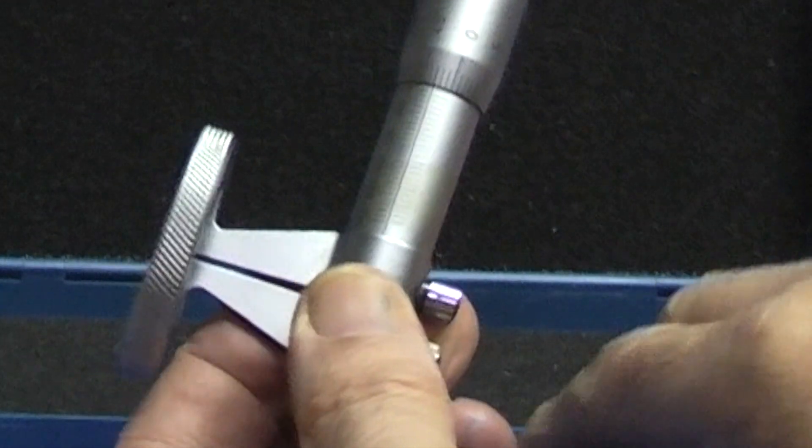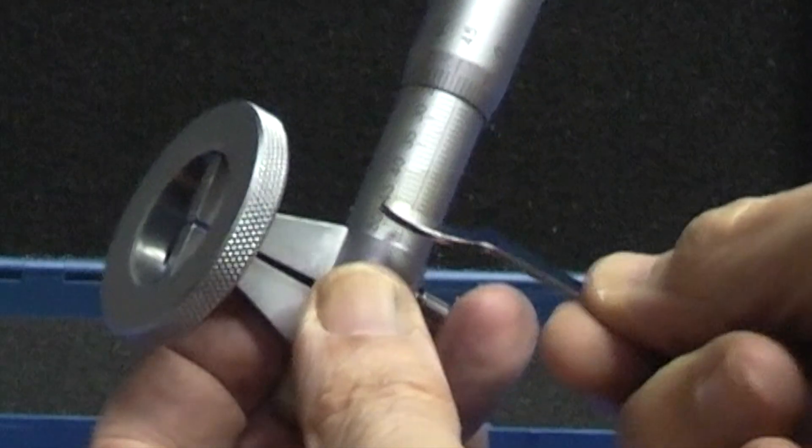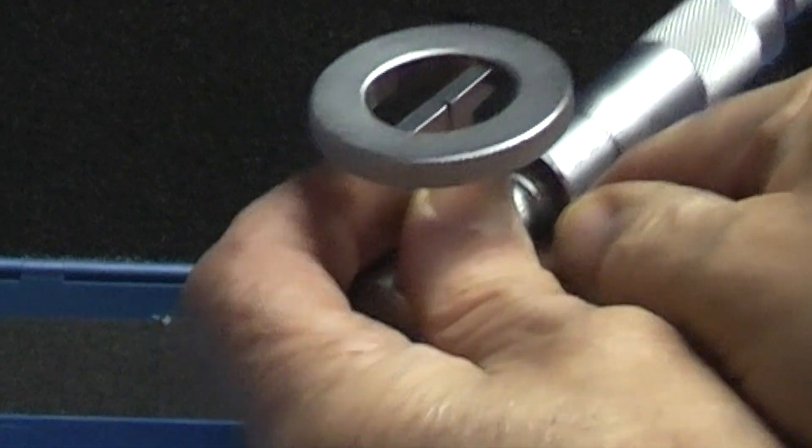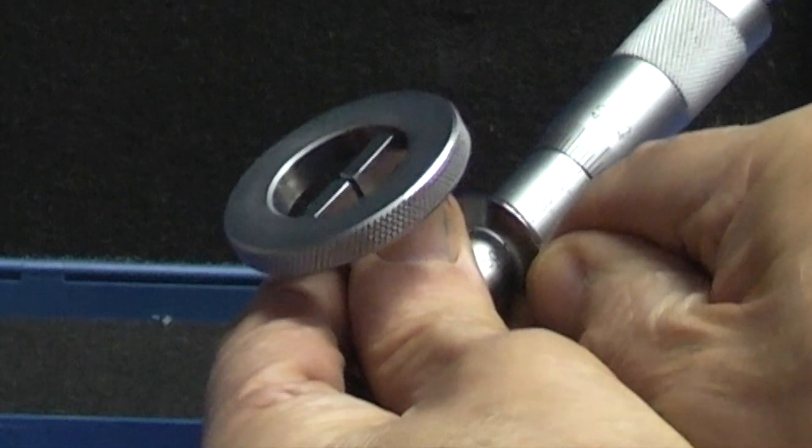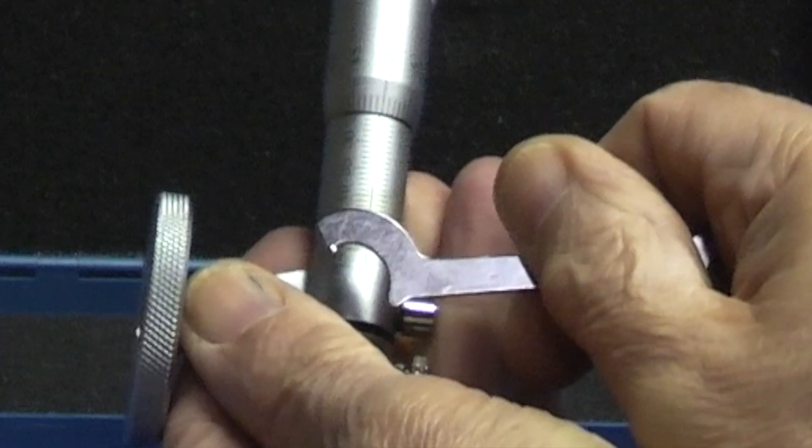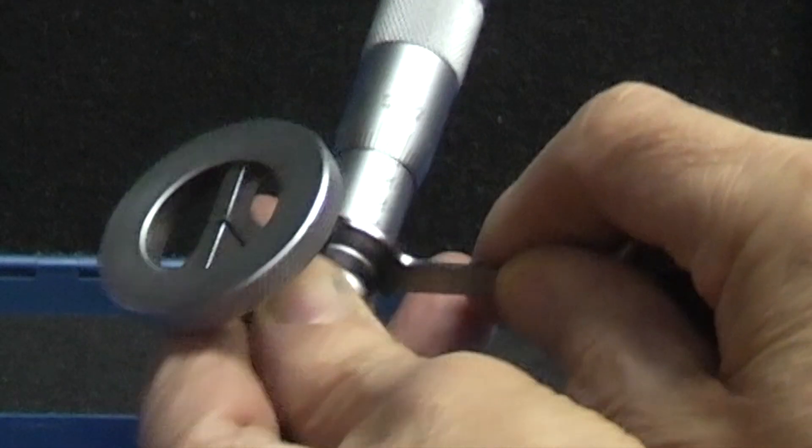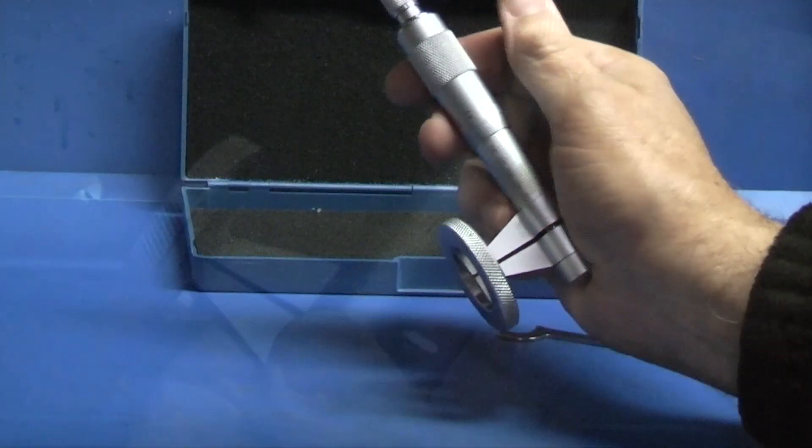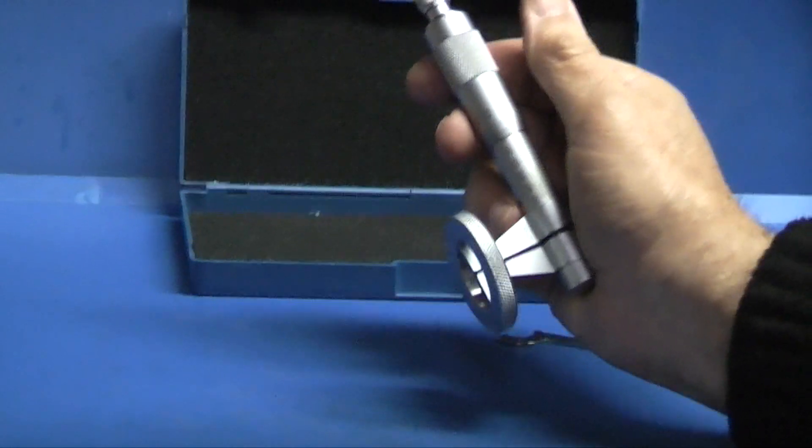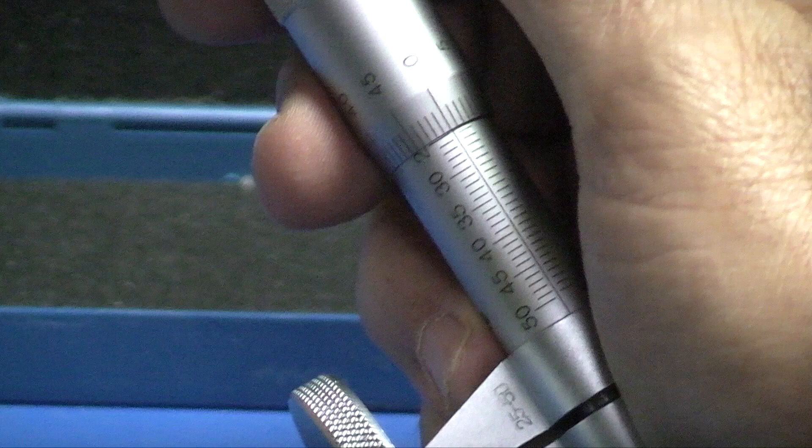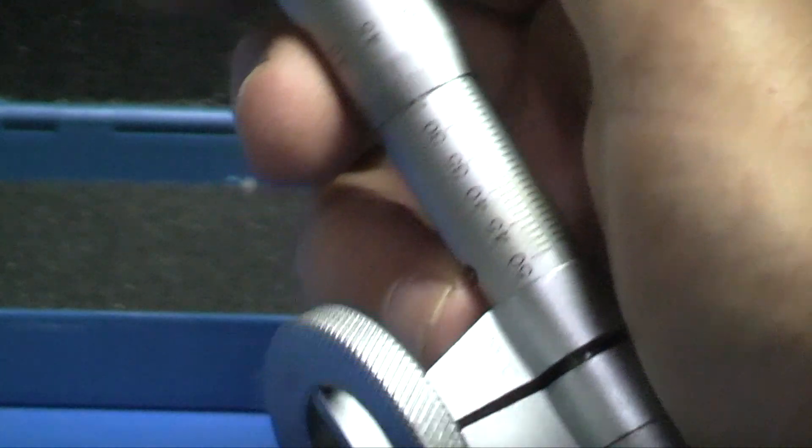All you need to do is take the spanner on the body. Move the body round until the zero lines up. Detailed instructions on how to adjust the micrometer can be found on the web page for the product. You can see that the zero is now in line with the datum mark. And that's a nice feel on the ring gauge.